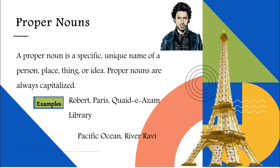What are proper nouns? A proper noun is a specific or unique name of a person, place, thing, or idea. Unlike common nouns, proper nouns always begin with a capital letter, regardless of their location in the sentence. It means that their first letter will be capitalized whether they begin a sentence or not.